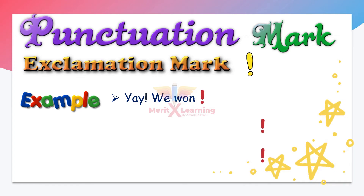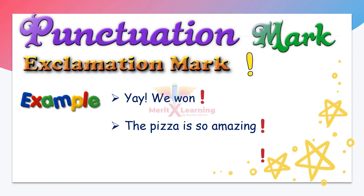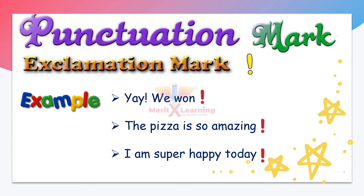Number one: 'Yay, we won!' This is an emotion, an excitement, so we use an exclamation mark at the end. Number two: 'The pizza is so amazing!' Again, this is excitement, we are showing our emotions, so we give an exclamation mark at the end. Number three: 'I am super happy today!' We are expressing our feelings and emotions, so again, we give an exclamation mark at the end.